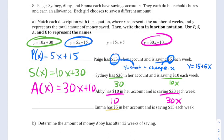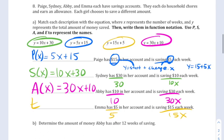Finally, we have Emma. Emma has 5 and is saving 15 per week, so 15x. So we're looking for 15x plus 5 and we'll write it as e of x for Emma.